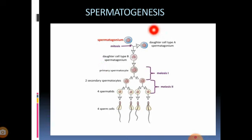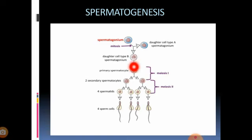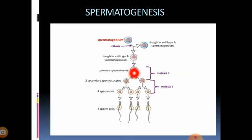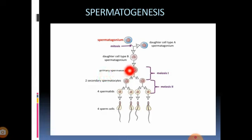Up to this type B spermatogonium is known as the multiplicative phase or mitotic phase. The spermatogonial cells are diploid in nature. Then this type B spermatogonium enters into the growth phase and it increases its size. What is the difference between type B spermatogonium and primary spermatocyte? Size is increased. How? Through accumulation of nutrition and replication of DNA, it forms a diploid primary spermatocyte. So primary spermatocyte formation is nothing but the growth phase.